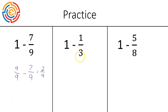In our second example, we are going to match the denominator of three. So our whole number one is going to become three out of three minus one out of three, which gives us two out of three as our final answer.